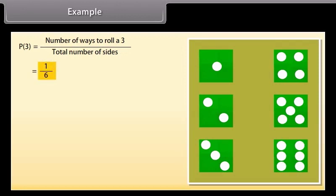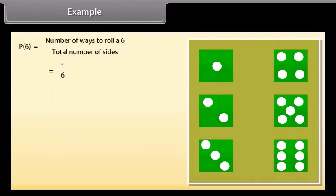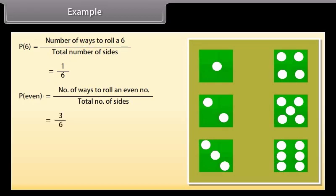Now we can see that the way to roll even numbers is 3. We can find the probability as P(even) equals number of ways to roll an even number upon total number of sides, which equals 3 upon 6, which is 1 upon 2.